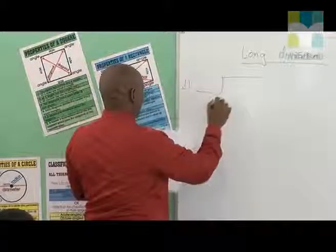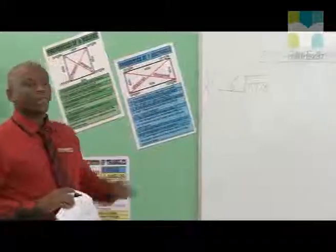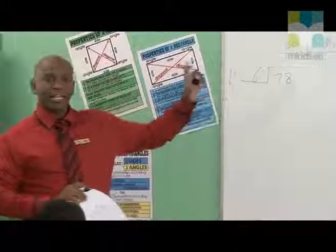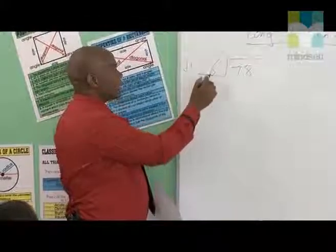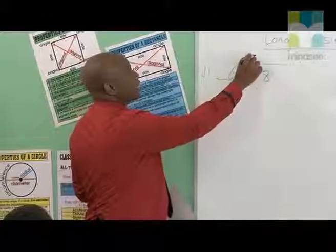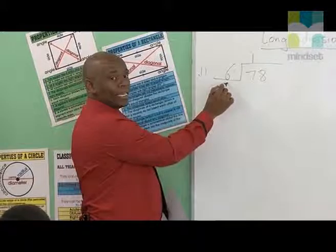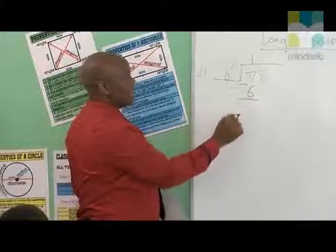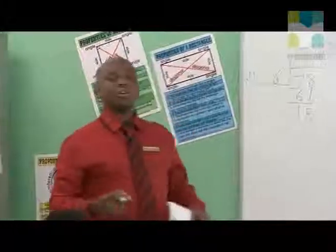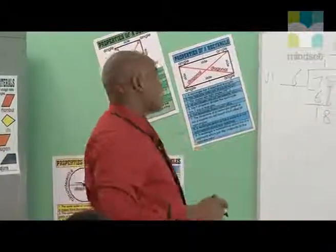I want to divide 78 by 6. This already shows us that we are using the long division method. The simpler way to do that: you start with the number that you divide by, you say six into seven — does it go? Yes. Six into seven goes one time. You put your one here. Then you take this one and multiply it by six, then you write your six underneath. Then after that you subtract: seven minus six equals one. Then you bring down the eight to make 18. Then you go again and use the same method from the beginning — six into 18.